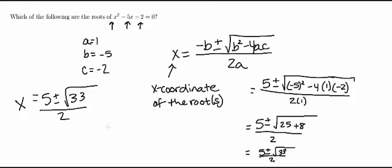So your positive root is going to be x equals 5 plus the square root of 33 over 2. Your negative root is going to be x equals 5 minus the square root of 33 over 2.